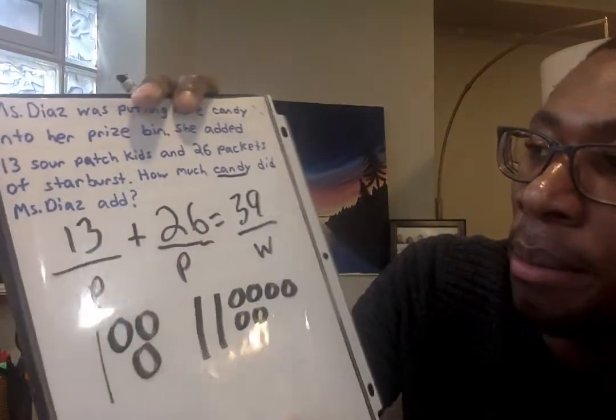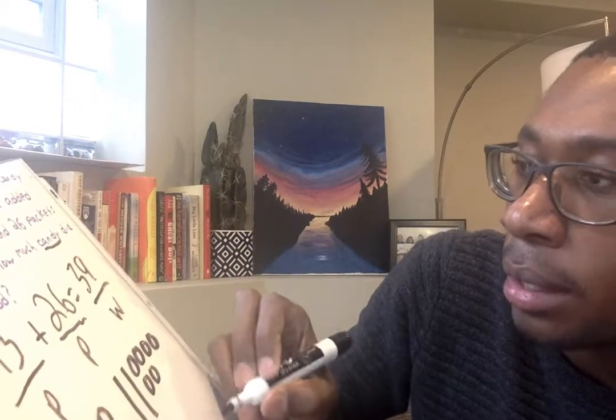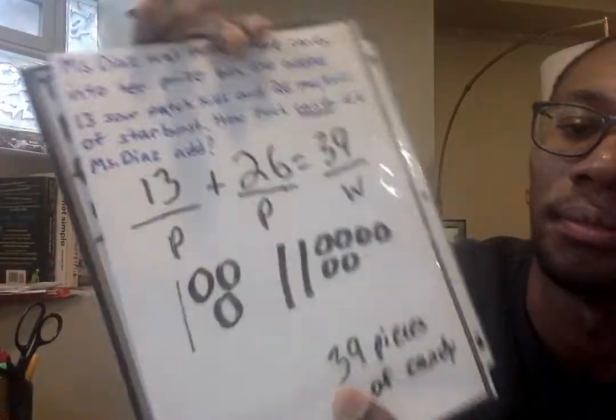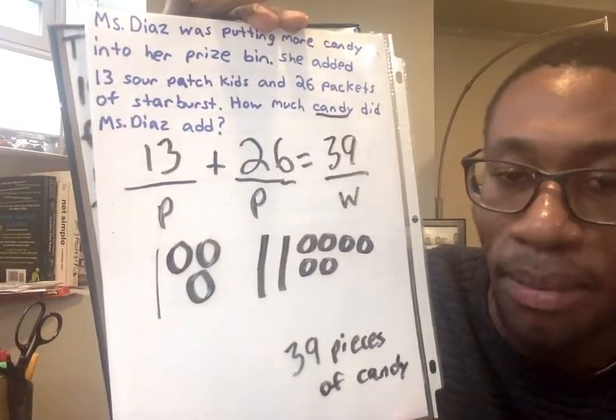And I can write at the bottom that Ms. Diaz added 39 pieces of candy. And that's all we got to do. Nice job, friends, so far. I'm going to go ahead and erase my whiteboard. If you need to, you can flip over your piece of paper or pause the video and grab a new piece of paper. And we'll do some quick addition number sentences. We'll do about four.